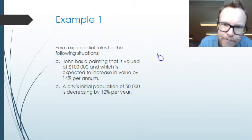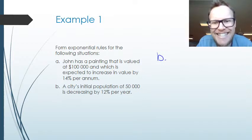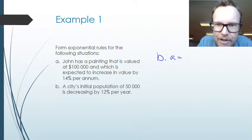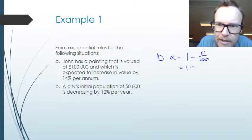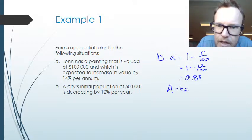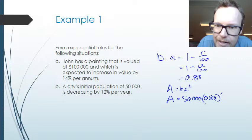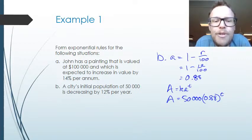For example b: a city's population is 50,000 and it's decreasing by 12% per year — exponential decay. The decay rate a equals 1 minus 12 over 100, which is 0.88. Using the general form A equals K times a to the power of T, with initial population 50,000 and decay rate 0.88, we get A equals 50,000 times 0.88 to the power of T.